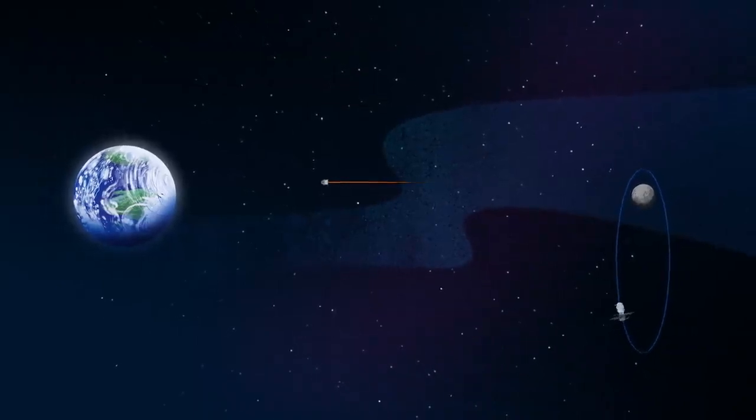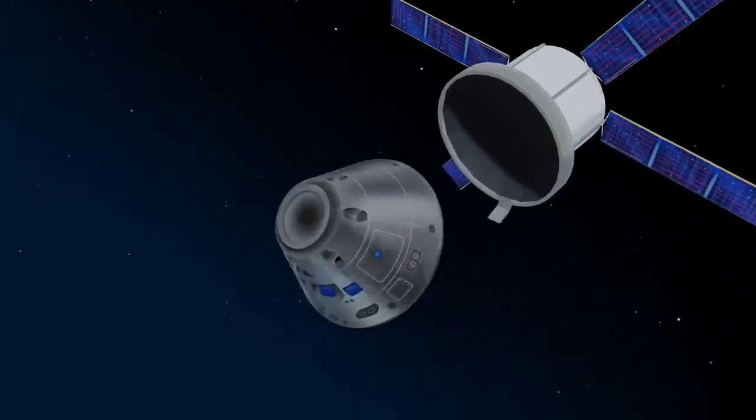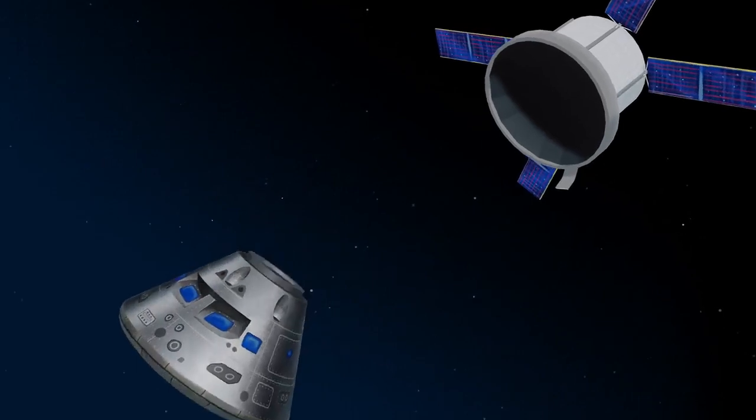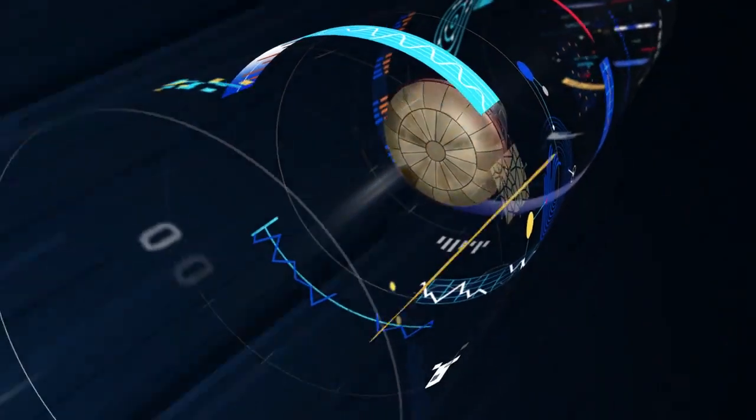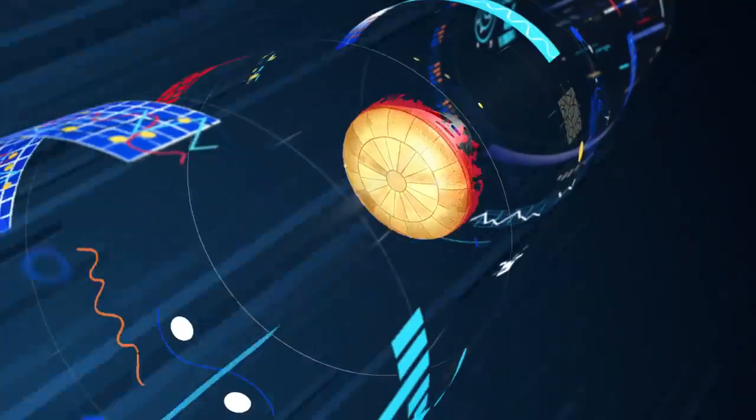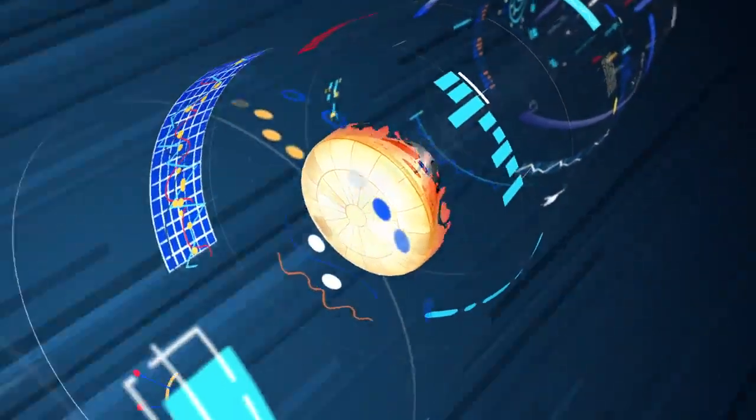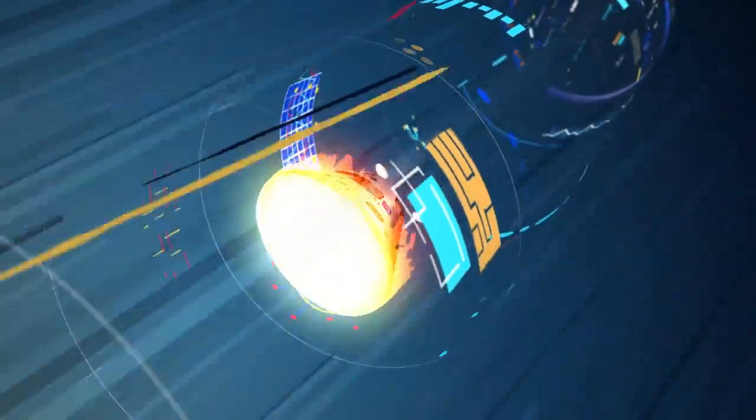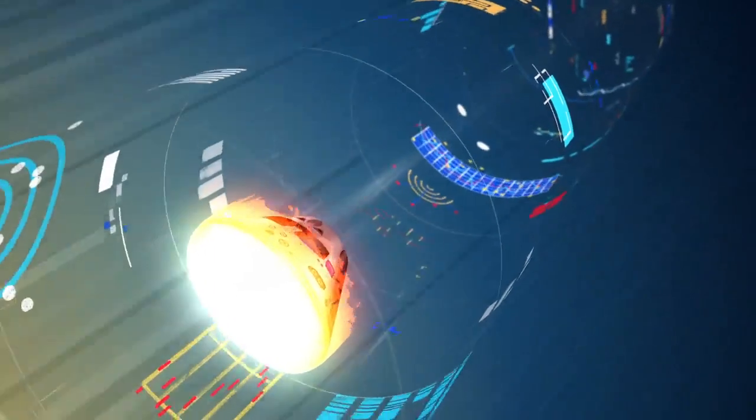As they near the end of this journey, the service module is released, and the crew module is oriented heat shield first. Entering Earth's atmosphere at 25,000 miles per hour, the friction of air slows Orion considerably, while also subjecting it to temperatures of 5,000 degrees.